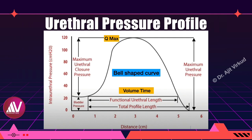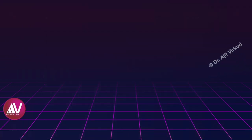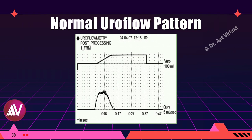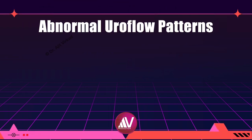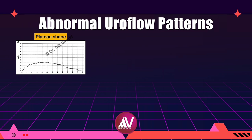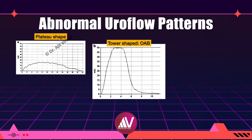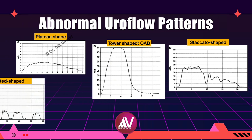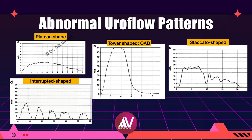Volume time is the total time taken to complete voiding including periods when the flow is interrupted. The actual uroflowmetry graph may not look like the diagram shown earlier. Here are some abnormal uroflowmetry patterns: a plateau-shaped curve suggests bladder outlet obstruction, which could be due to pelvic organ prolapse, urethral stricture, external compression by pelvic fibroids, after anti-incontinence surgery, or a weakly contractile bladder. A tower-shaped graph is suggestive of poor active bladder. A staccato-shaped curve suggests dysfunctional voiding, and an interrupted shape suggests underactive detrusor with abdominal straining.